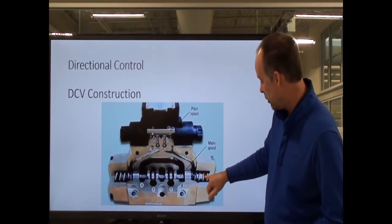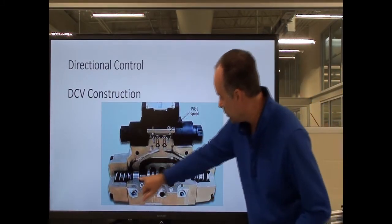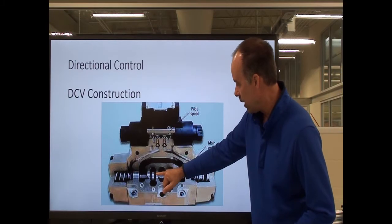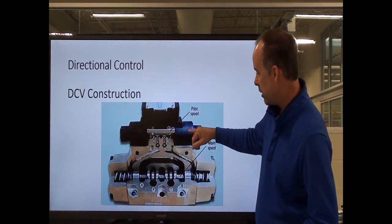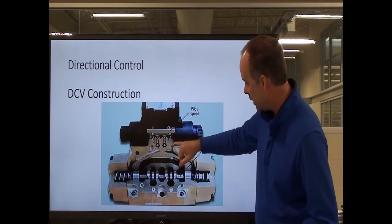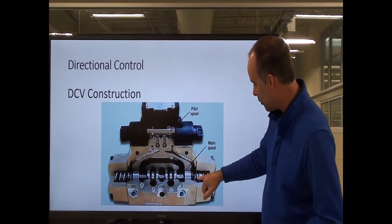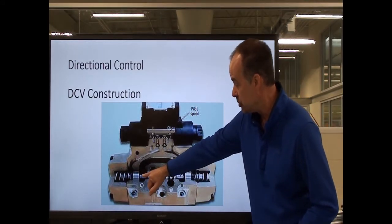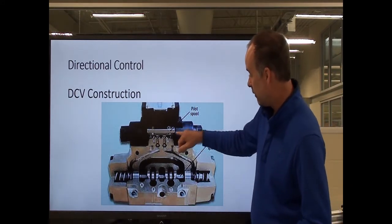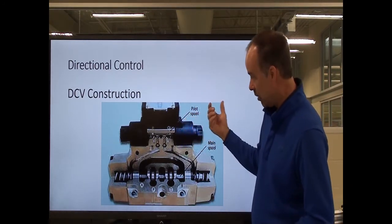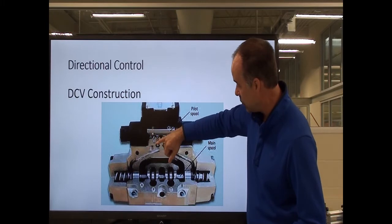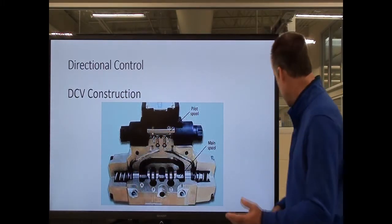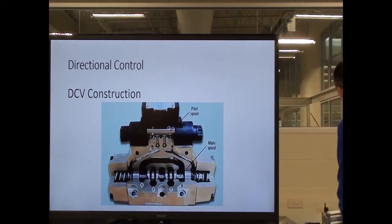On the end of the spool you can see springs on each end — these springs hold the spool right in the middle. When I actuate the pilot valve up top, it puts hydraulic pressure on the end of the spool and causes it to physically move and shift to one side. If I want it to go the other way, I can energize the other side of the spool and pressurize that side to shift it over.